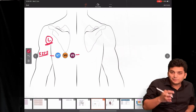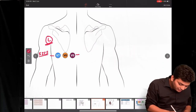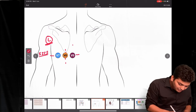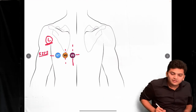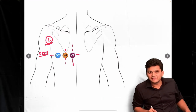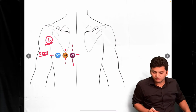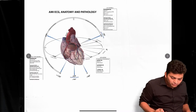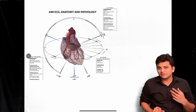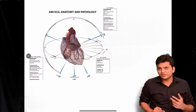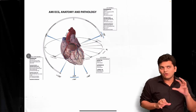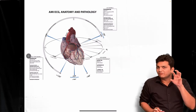The posterior leads V7, V8, and V9 are placed in the posterior axillary line, mid-scapular line, and paravertebral line respectively. This is how we place the various leads of the ECG. Now, once we know the placement, we need to understand why leads are placed this way — because they capture information from a particular side of the heart.